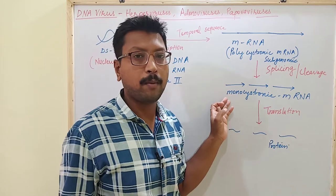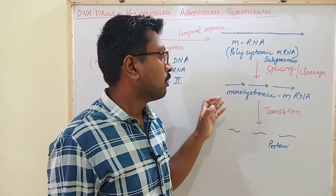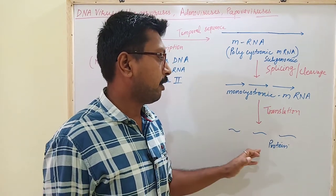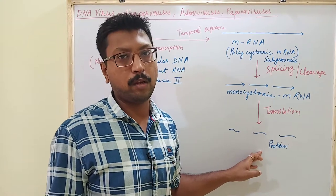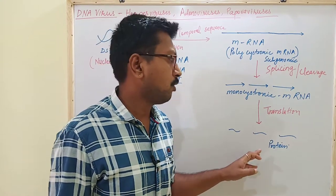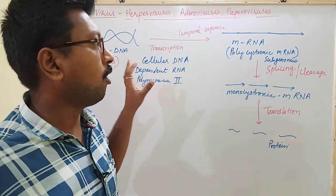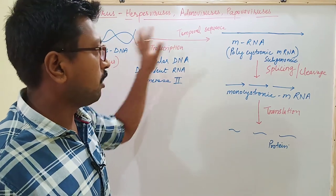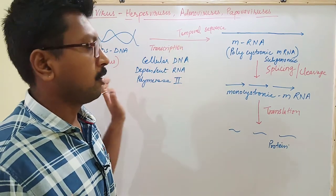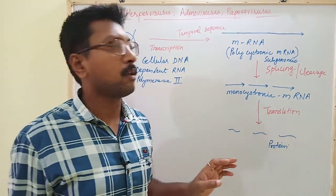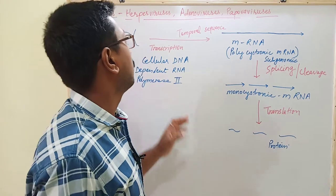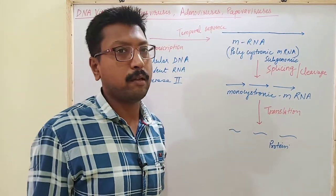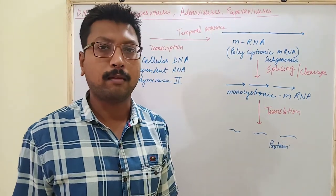After splicing and cleavage, the polycistronic subgenomic mRNAs are finally cleaved into small products of monocistronic mRNA. This monocistronic mRNA is then converted into monocistronic proteins. This entire sequence is seen in the case of herpes virus, adenovirus, and papova virus during replication.